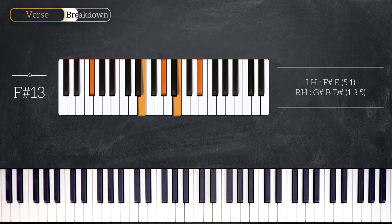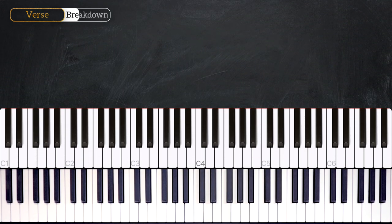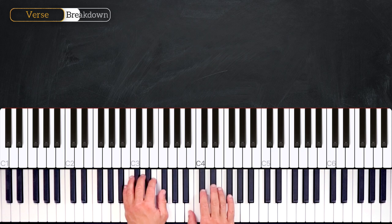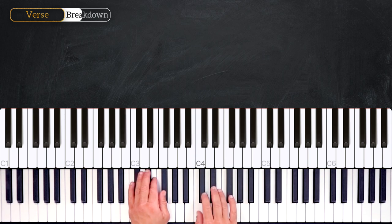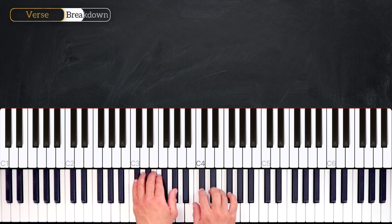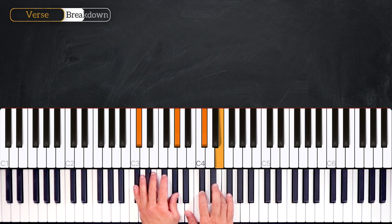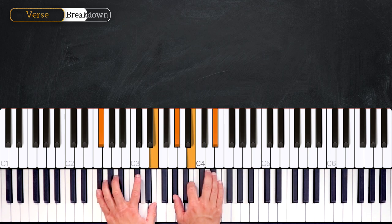Let's quickly recap the chords together. We start by playing a B major chord, then the transition chord C diminished, which leads us to the second degree C# minor, and we end on the fifth degree playing the F# thirteenth.